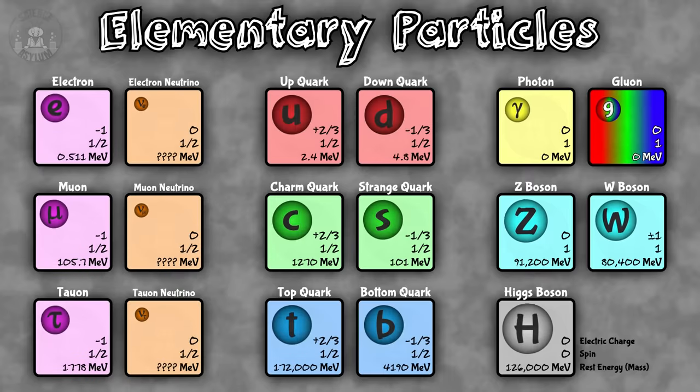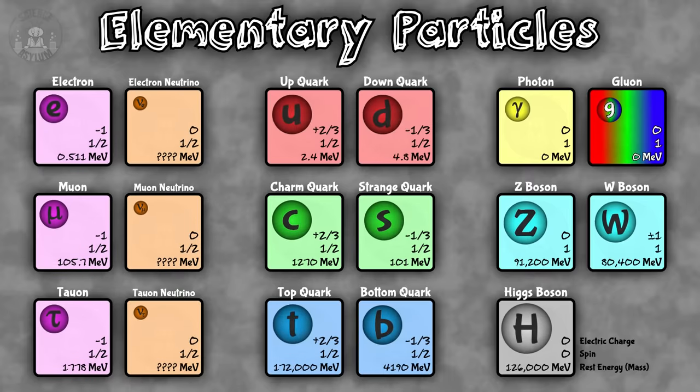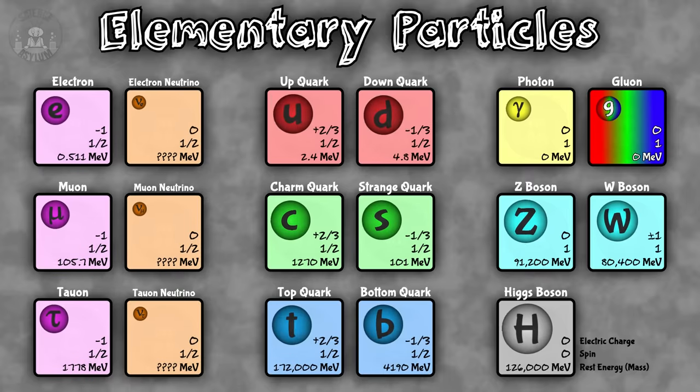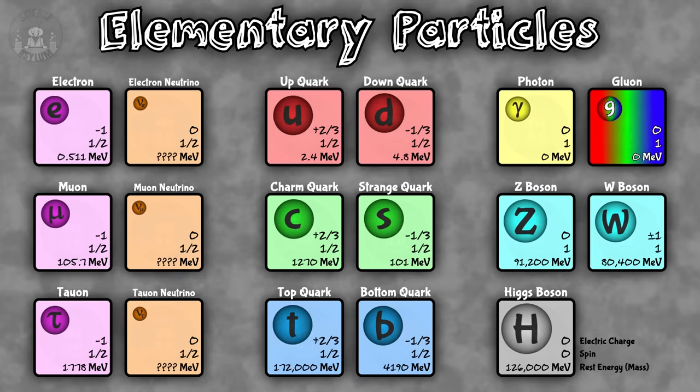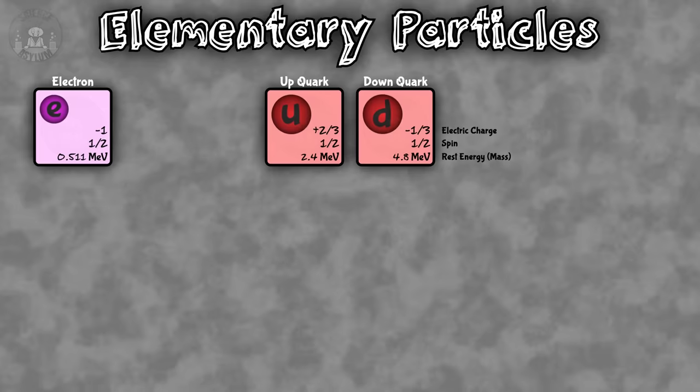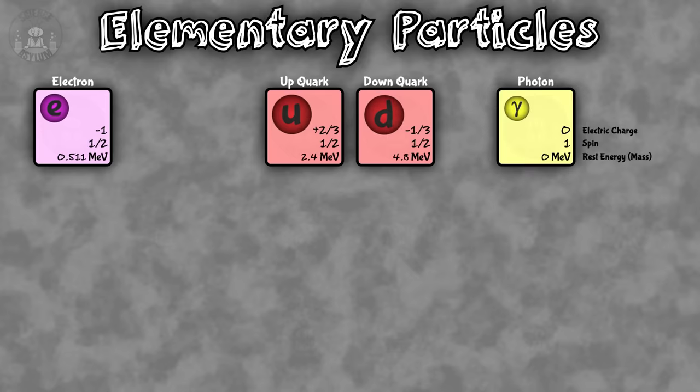Most of the things that we experience, we interact with on a daily basis, with very few exceptions are made of three of these particles: the up quark, the down quark, and the electron. That's it. And those things tend to interact with each other via photons. Those are sort of the four elementary particles that we ever interact with.